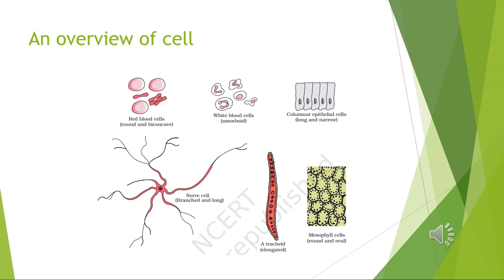Cells differ greatly in size, shape, and activities. Mycoplasmas, the smallest cells, are only 0.3 micrometers in length, while bacteria could be 3 to 5 micrometers. The largest isolated single cell is the egg of an ostrich. Human red blood cells are about 7 micrometers in diameter, and nerve cells are some of the longest, possibly up to one meter. Cells may be disc-like, polygonal, columnar, cuboidal, thread-like, or irregular — their shape varies with the function they perform.